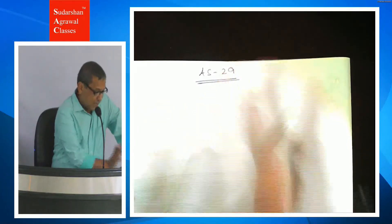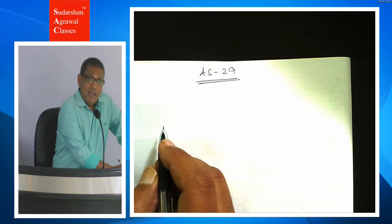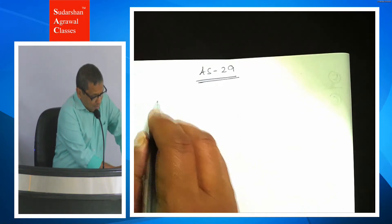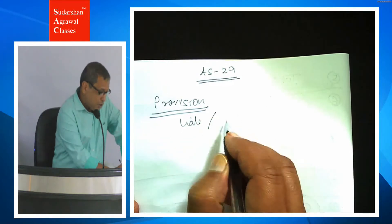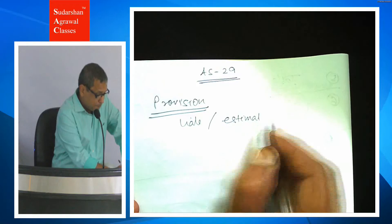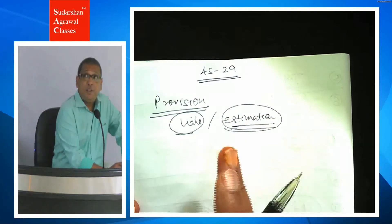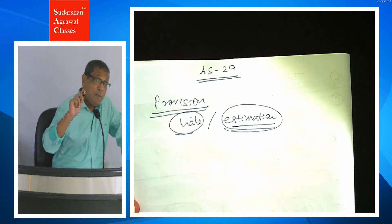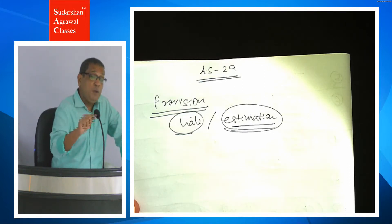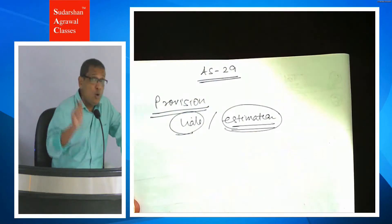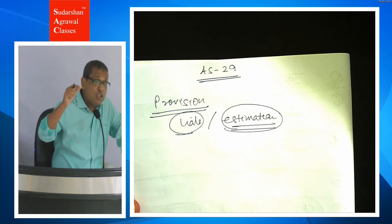AS 29 ka revision karte hain. AS 29 ke andar 3 topics cover hoti hain: one is provision, another is contingent liabilities, and the third one is contingent asset. Provision is a liability which can only be measured by using a substantial degree of estimation. Liability hona zaruri hai, aur amount agar aapko nahi pata ho year end mein jab aap balance sheet mein record karne ja rahe ho — amount agar aap estimate karke nikal rahe ho — then only something can be a provision. For example, a creditor for goods cannot be a provision; it's a liability but it is not requiring any estimation. A loan taken is not a provision because you know the exact amount. Lekin repair mein kitna kharcha lagega — provision for repair — isko warranty bolte hain.